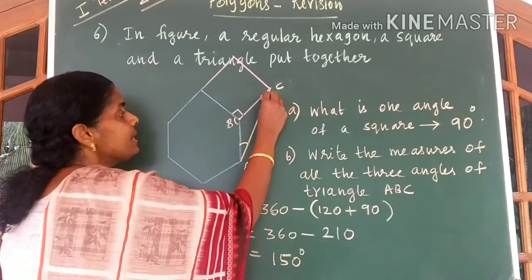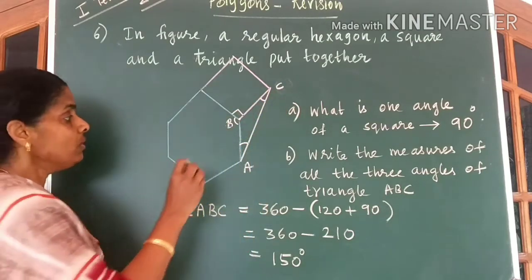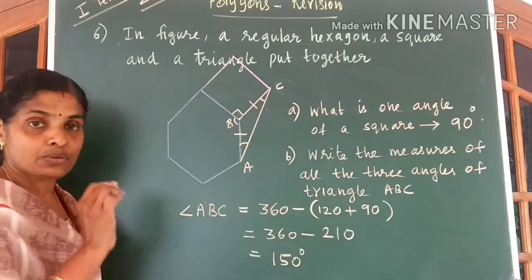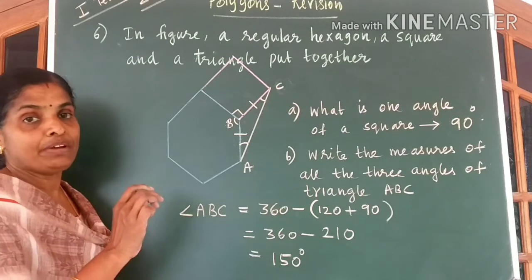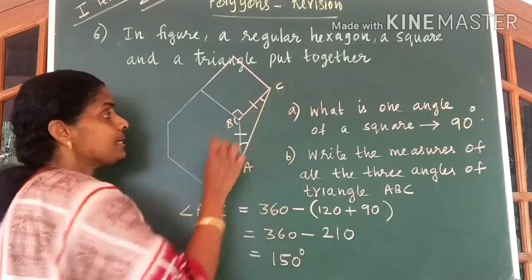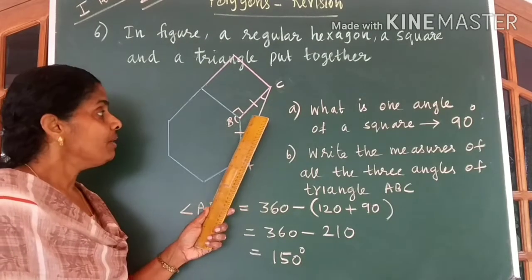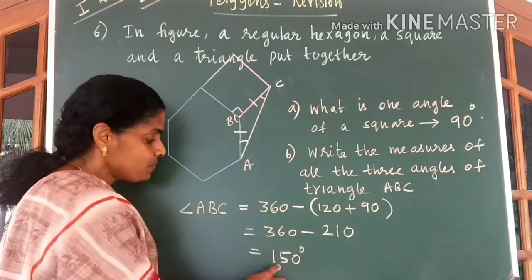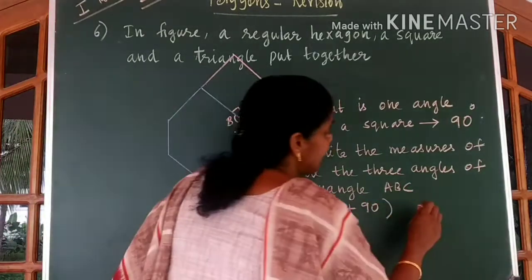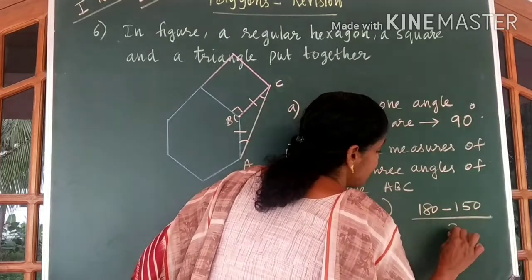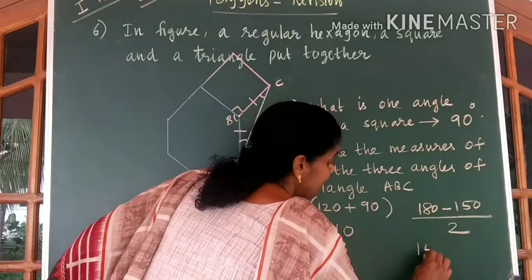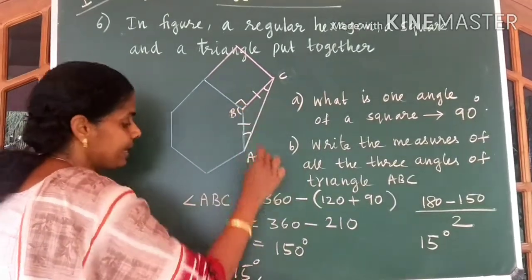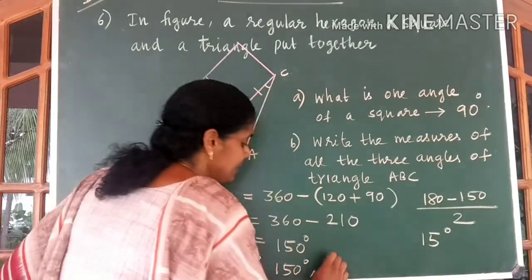Now we have to find the other two angles of triangle ABC. Since AB and BC are equal (it is a regular hexagon and square made with the same measures), triangle ABC is an isosceles triangle. The angle sum is 180 degrees and one angle is 150 degrees. The other two angles will be (180 minus 150) divided by 2, which is 30 divided by 2, equal to 15 degrees each. So the angles of triangle ABC are 15 degrees, 150 degrees, and 15 degrees.